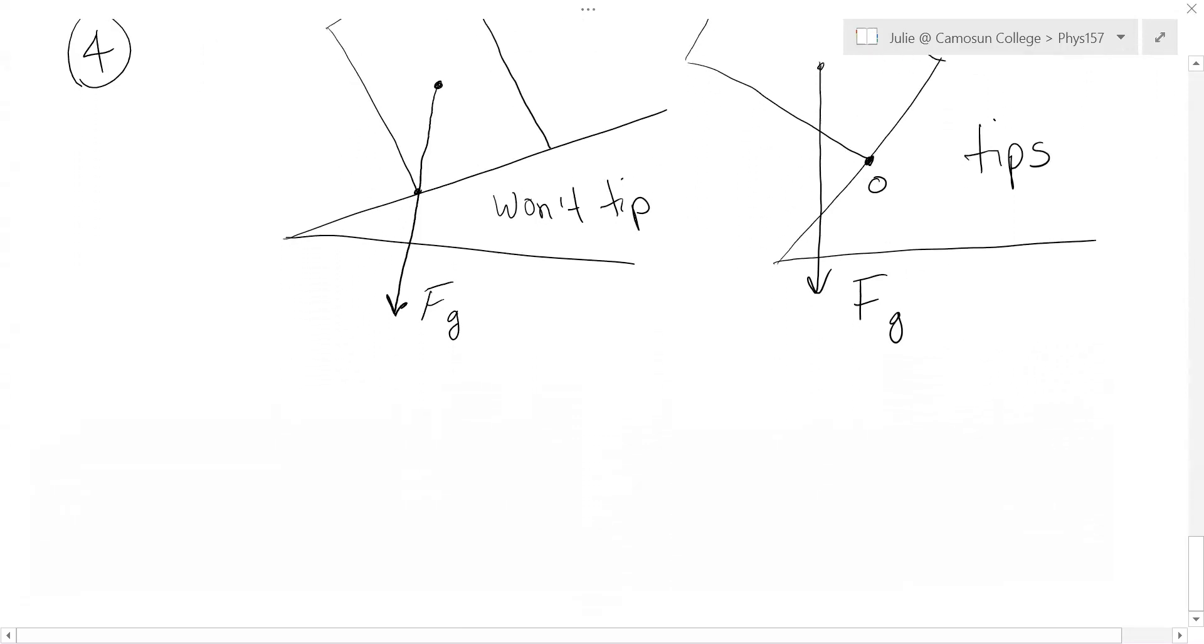Now, this is why tall things tend to tip and squat things don't. Because think about if you have a pretty steep angle and something is lying like this. Well, the force of gravity vector is way back here. Imagine how huge that incline has to be to get something like that to tip. Whereas if you've got a tall, narrow object like this, and your force of gravity is in this geometric center, look how easy that is to tip. You don't have to tip it very much at all to get it to go past this point.